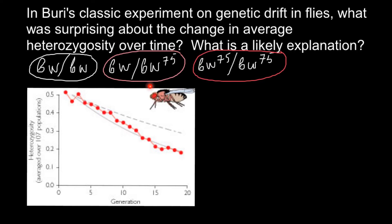When there were two BW75 alleles (BW75/BW75), the color of the eyes was red. As you can see, the heterozygous form is intermediate between the two homozygous variants — this is incomplete dominance, where the heterozygous phenotype is just intermediate between the two extreme homozygous variants.